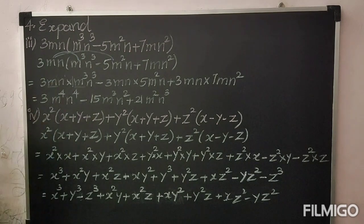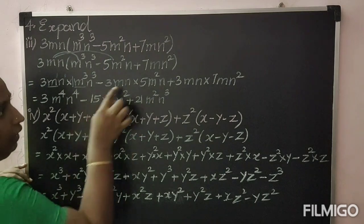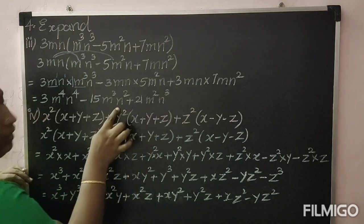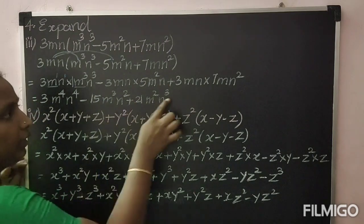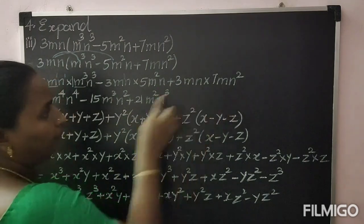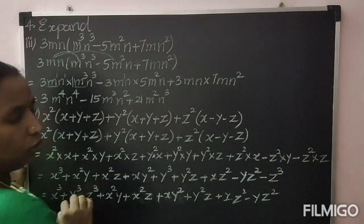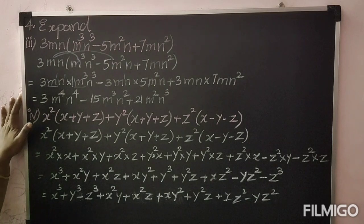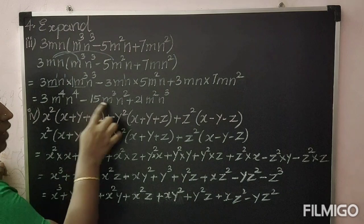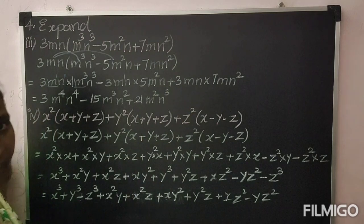Next: minus, 3 fives are 15; m into m² gives m³, n into n gives n². Then plus, 3 sevens are 21; m into m gives m², n into n² gives n³. The answer is 3m⁴n⁴ − 15m³n² + 21m²n³.